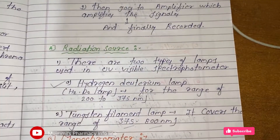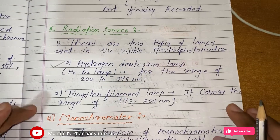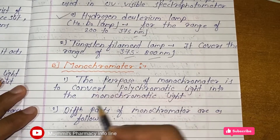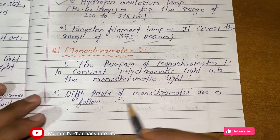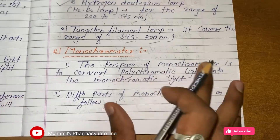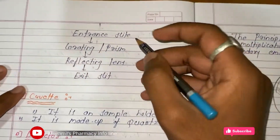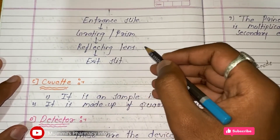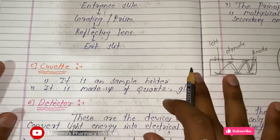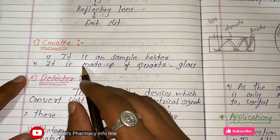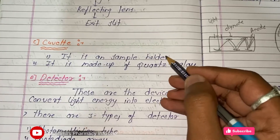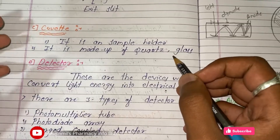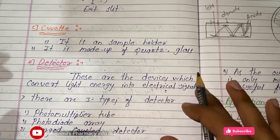The purpose of the monochromator is to convert polychromatic light into monochromatic light. Its parts are: entrance slit, gratings or prism, reflecting lens, and exit slit. The cuvette is a sample holder — we hold the sample in the cuvette. It is made up of quartz or glass.